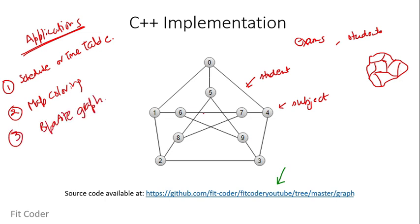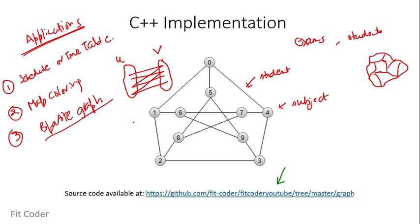The second application is map coloring: given a map of a country with various states, we need to color it so no two adjoining states have the same color. We can use this algorithm to find the minimum number of colors required. The third application is bipartite graphs — a graph where vertices can be divided into two independent sets U and V such that every edge has one vertex in U and one in V. We can check if a graph is bipartite simply by verifying whether it can be colored with two colors.